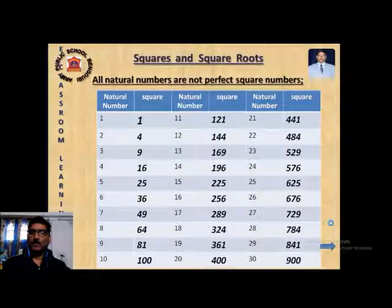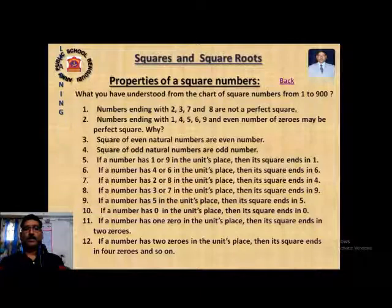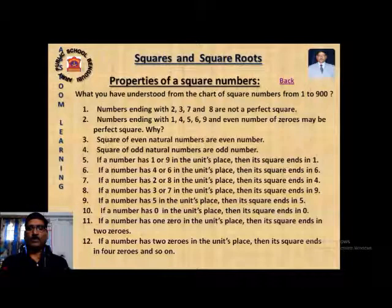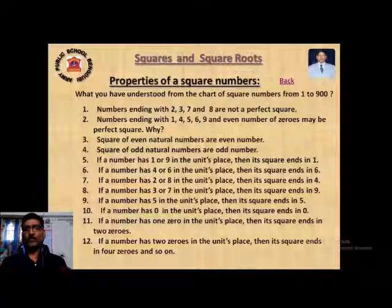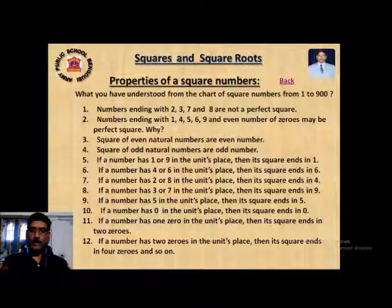Here is the unit digit pattern: if a number has 4 or 6 in the unit place, its square ends in 6. If 2 or 8 is in the unit place, the square ends in 4. If 3 or 7 is in the unit place, the square ends in 9. If 5 is in the unit place, the square ends in 5. If it ends in 0, the square ends in 00; if it ends in 00, the square ends in 0000. These are important properties and patterns you must remember — many objective and MCQ questions can be based on this table.